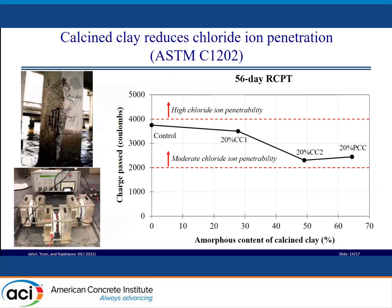The rapid chloride permeability results are shown in the figure, with charge passed on the y-axis and amorphous content of calcined clays on the x-axis. The chloride ion penetrability of all mixtures, including the control mixture, are in the moderate range according to ASTM standard. However, using CC1 can slightly reduce the charge passed, while CC2 and PCC can significantly reduce this value compared to the control mixture.